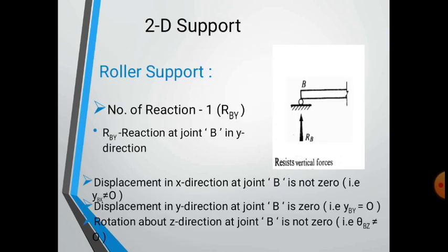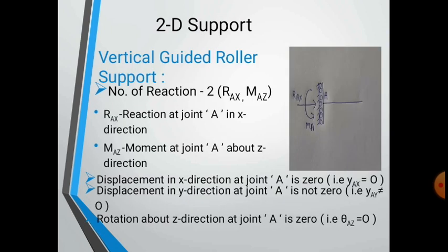For the roller support, there is only one reaction component. As shown at joint B, it is denoted as RB y — the reaction at joint B in the y-direction. The displacement in the x-direction at joint B is not zero, the displacement in the y-direction is zero, and the rotation at joint B is not zero since it can rotate. Next is the vertically guided roller support.